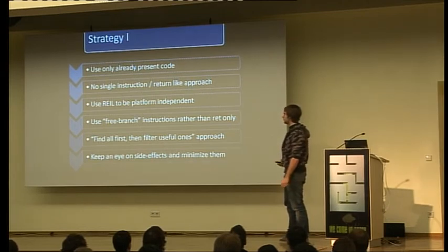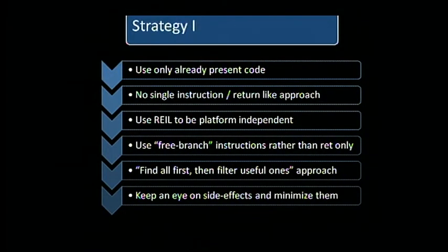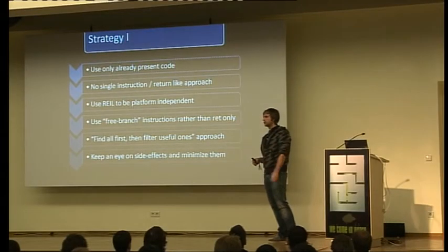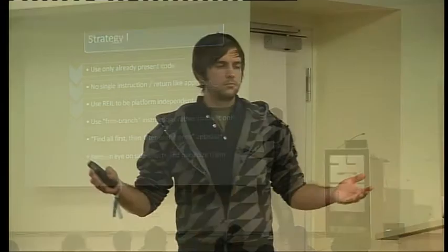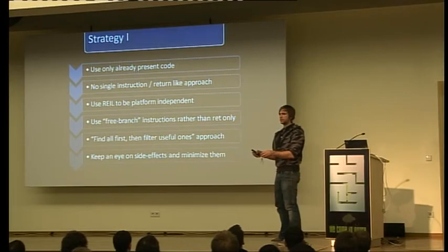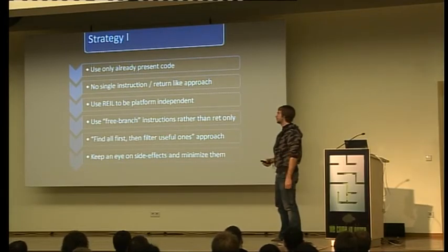Return-oriented programming chains instruction sequences together using return instructions. We defined a 'free branch instruction' rather than only returns, because in multiple architectures it's not only possible to use return instructions but also jumps to registers. In ARM, it's even possible to use any arithmetic instruction to change the program counter, so it's not really good to only look at return instructions — your possibilities are much wider in most architectures.